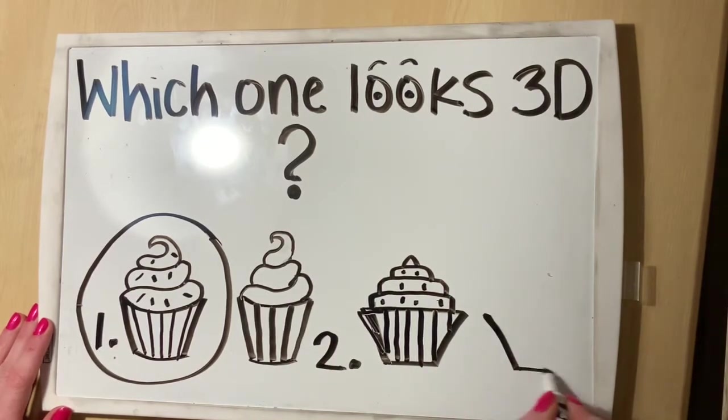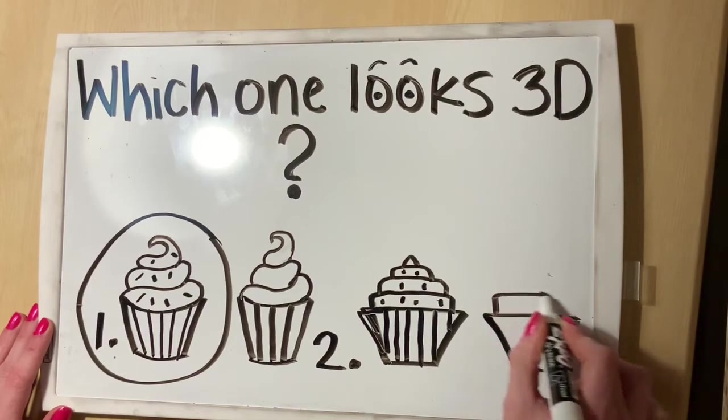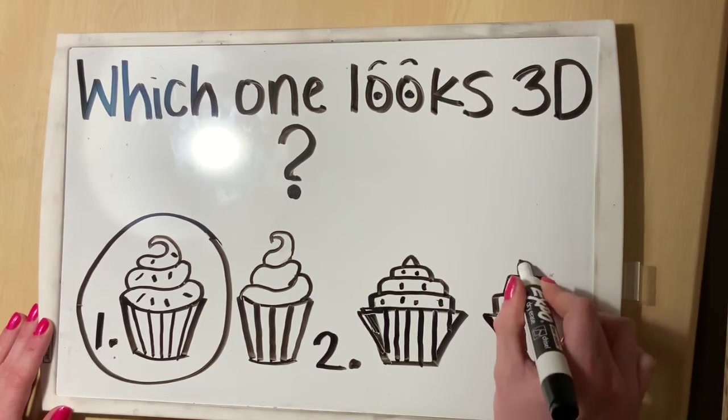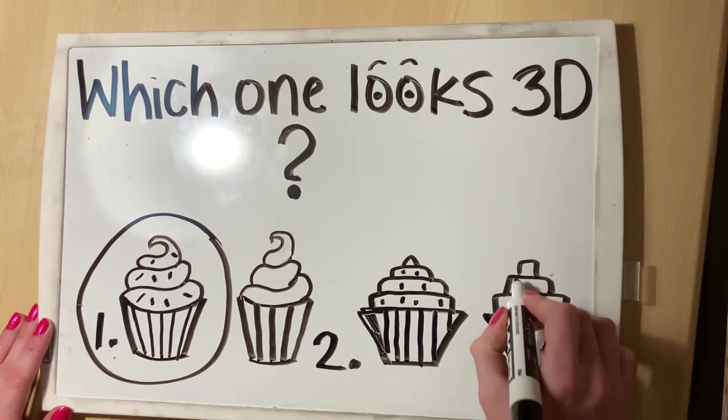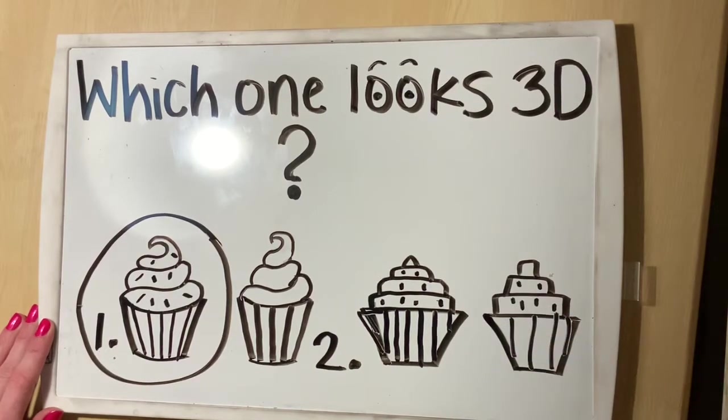If you just use straight lines like number two, it's not going to work out so well. It's not going to look 3D. It's going to look flat. So now that we know that, let's draw a cupcake together.